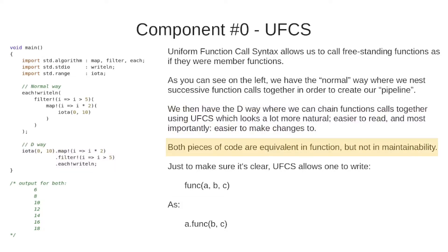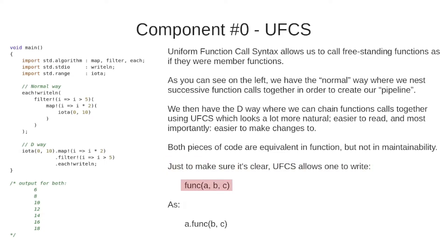Both pieces of code are equivalent in function but not in maintainability. UFCS allows one to write a freestanding function with parameters A, B, C as parameter A dot freestanding function with parameters B and C. We take the freestanding function and apply it to A as if it was a member function of A. It makes a lot more sense when you do it yourself.